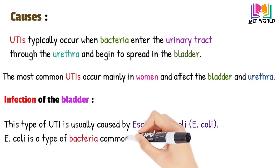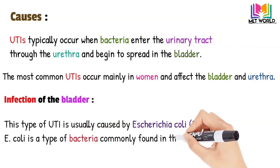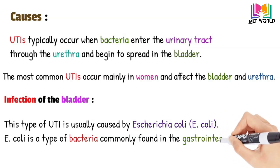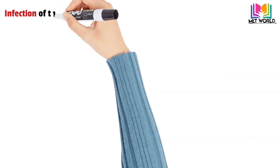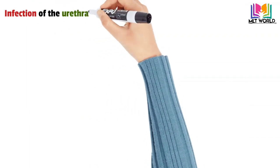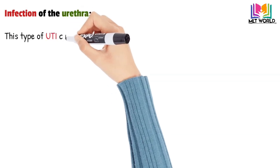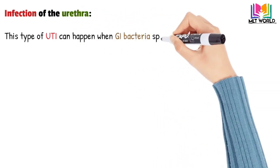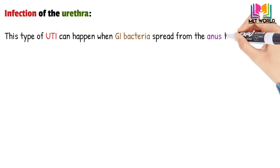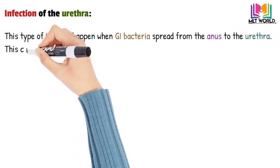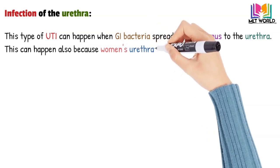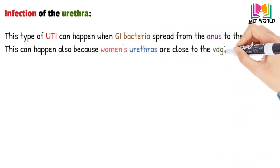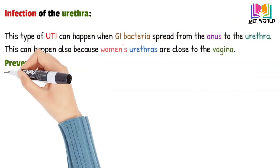Sometimes other bacteria are also the cause of infection. As all women are at risk of bladder infection because of their anatomy, infection of the urethra can happen when gastrointestinal bacteria spread from the anus to the urethra. An infection of the urethra can also be caused by sexually transmitted infections like herpes or gonorrhea, because the woman's urethra is close to the vagina.